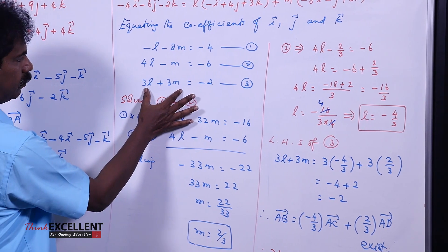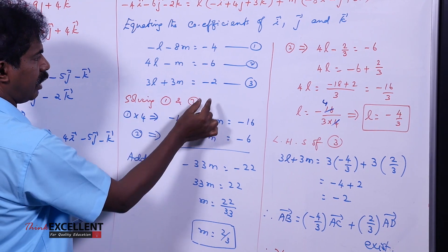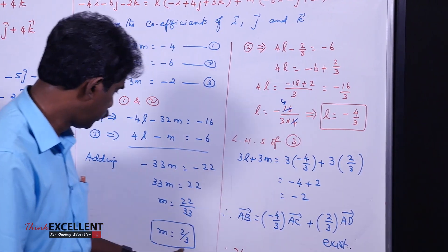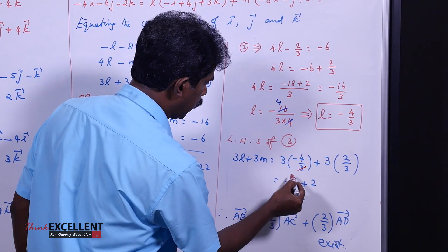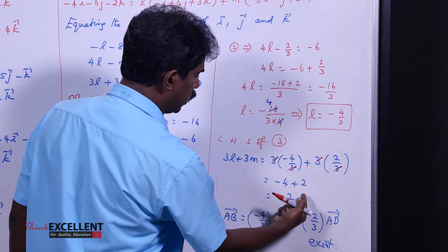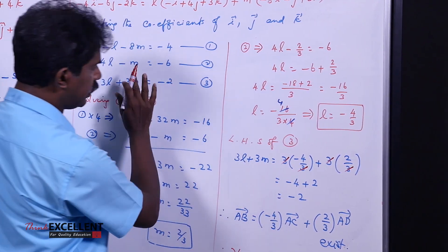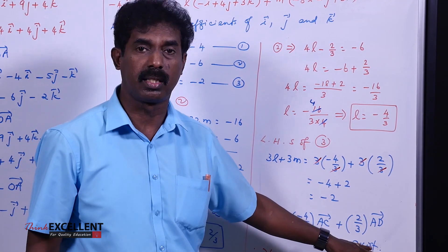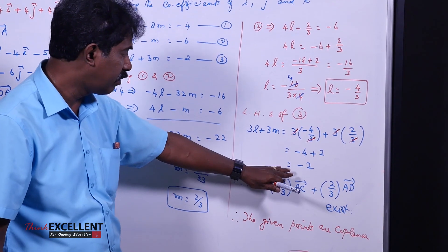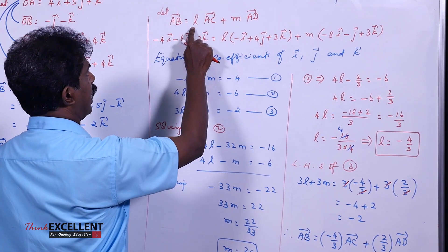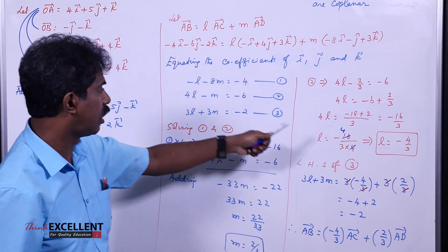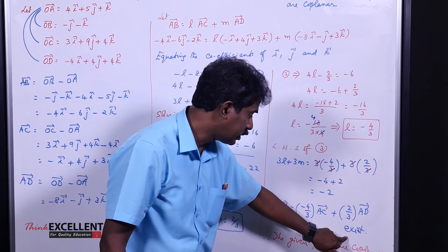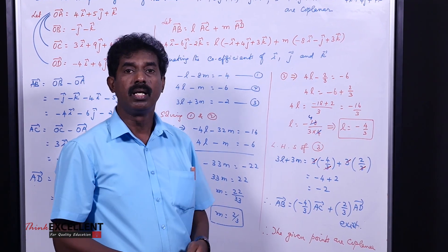Since the third equation is satisfied, the relation exists. So AB vector equals (minus 4/3) times AC vector plus (2/3) times AD vector. We say this relation exists for the values L equals minus 4/3 and M equals 2/3. Therefore, the given four points are coplanar. If you had obtained a different value instead of minus 2, you would say the relation does not exist and the points are not coplanar. But here it satisfies, so the four points are coplanar.